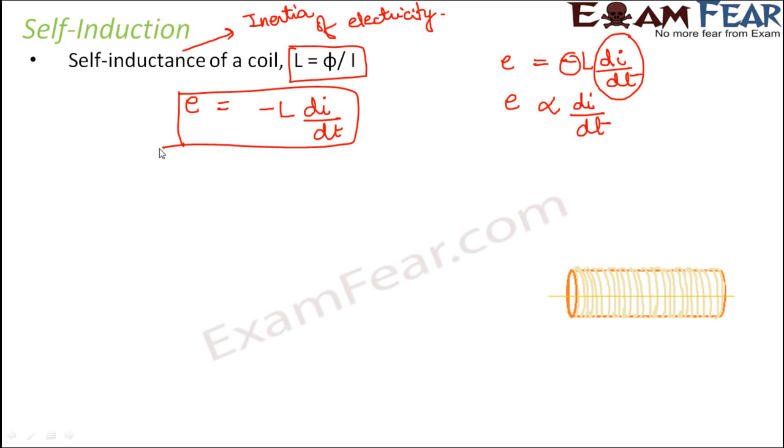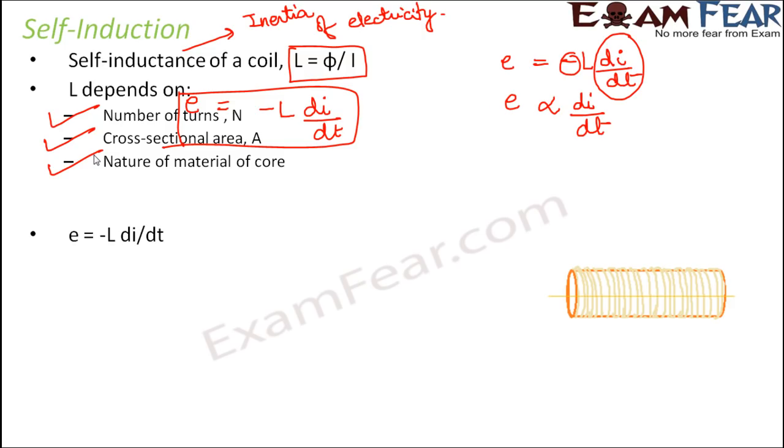So whenever you talk about coil and self-inductance, we will mostly make use of this relationship. Now let us look at the factors on which L depends. L depends on the number of turns, cross-sectional area and the nature of material of the core. As such L is constant, but L can vary from one material to another. So as I said, this is the main expression when it comes to self-inductance.